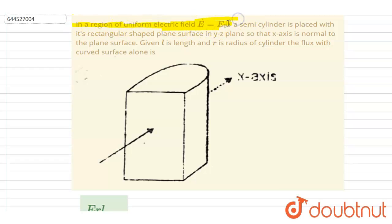In a region of uniform electric field, a semi-cylinder is placed with its rectangular save plane in yz plane and so that x is normal to the plane. Given l is the length and r is the radius of the cylinder, then flux through the curved surface alone.